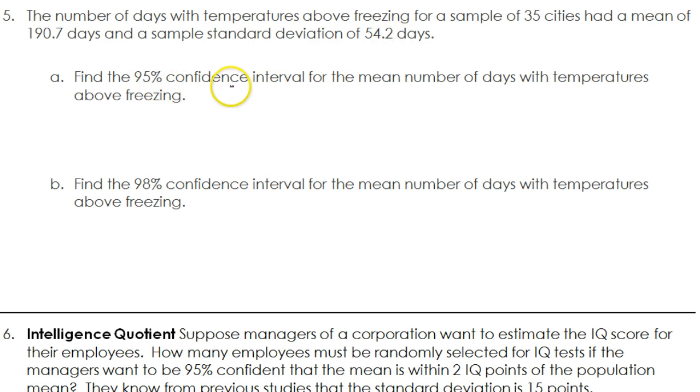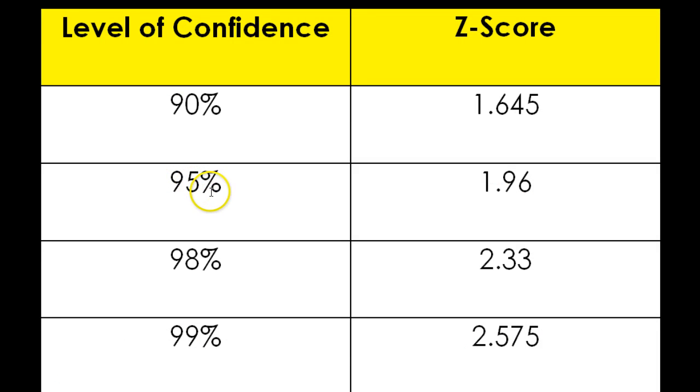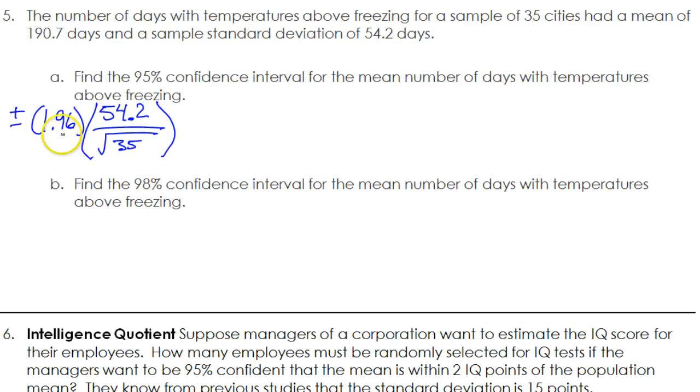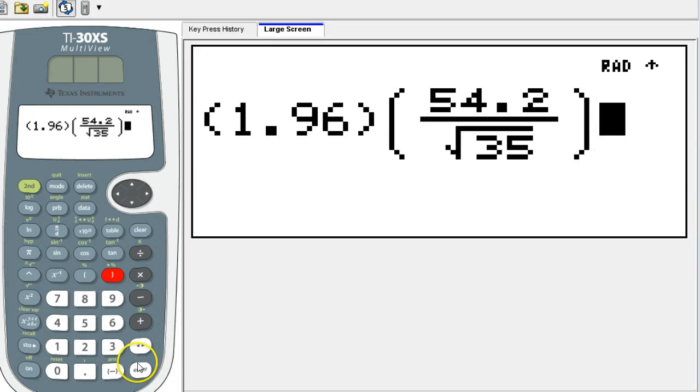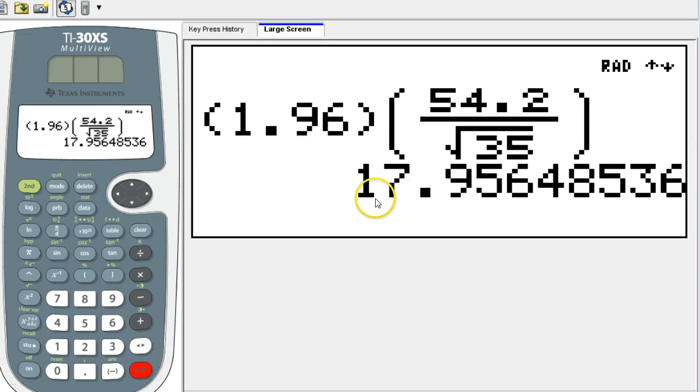Find the 95% confidence interval for the mean number of days with temperatures above freezing. For a 95% level of confidence, we're going to use a z-score of 1.96. So we do plus or minus z-score times the standard deviation over the square root of the sample size, and that should give us our margin of error. 17.96.